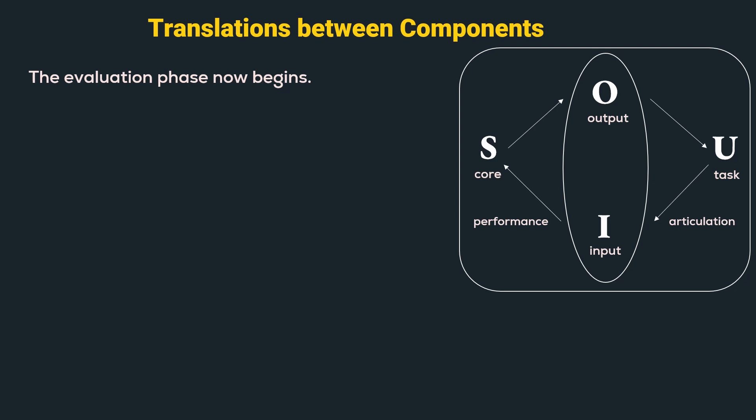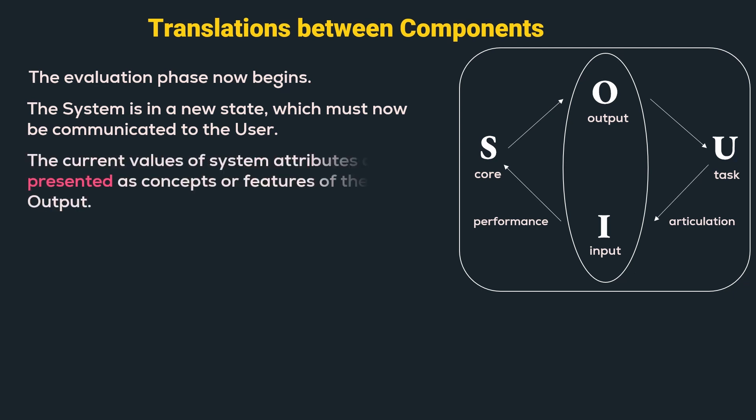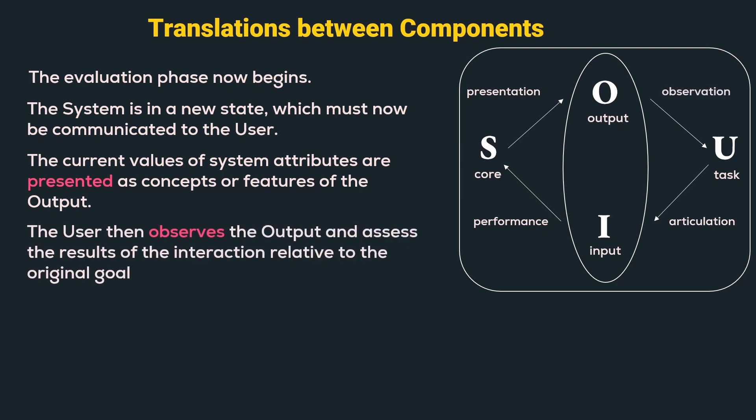Then the evaluation phase begins. The system is now in a new state which must be communicated to the user. The current values of the system attributes are presented as concepts or features of the output. The user then observes the output and assesses the results of the interaction relative to the original goal. This ends the evaluation phase and hence the interactive cycle.